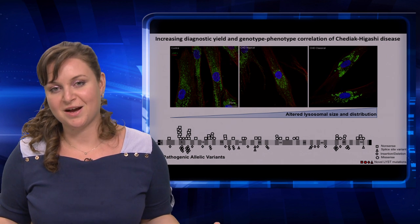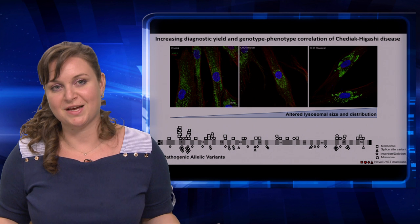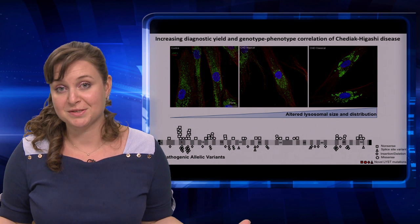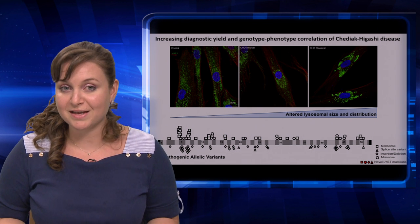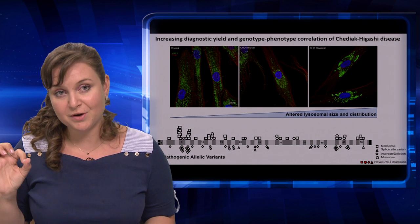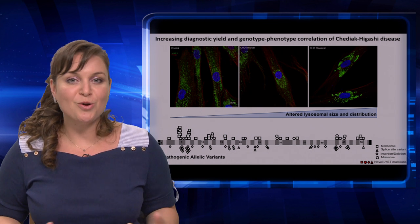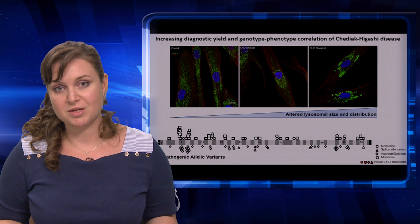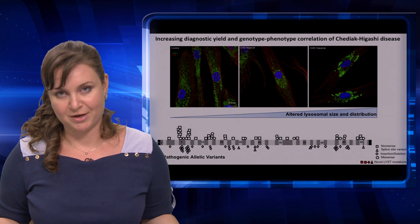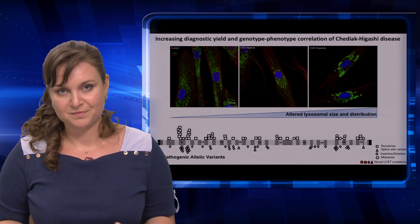Just like in a house, cells have to recycle cellular waste. For this task, they rely on a spherical organelle called the lysosome, which works like the rubbish can of the cell.